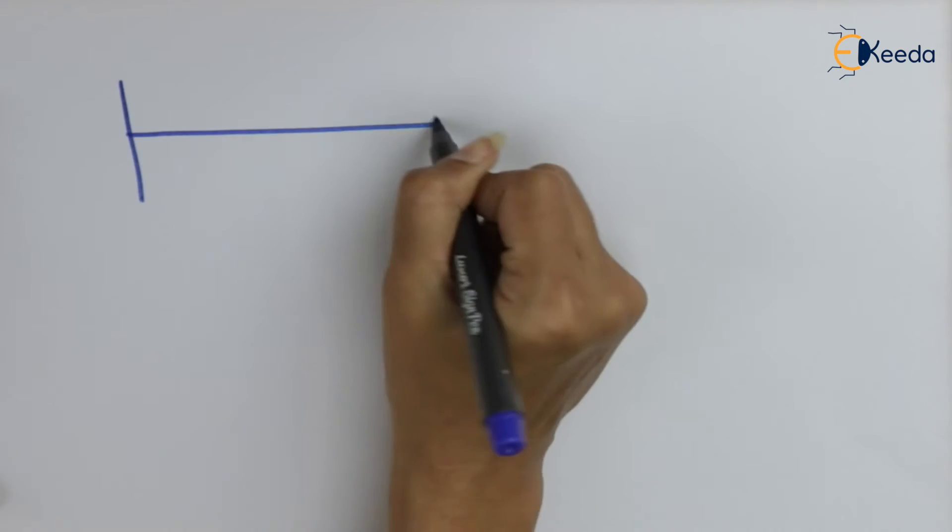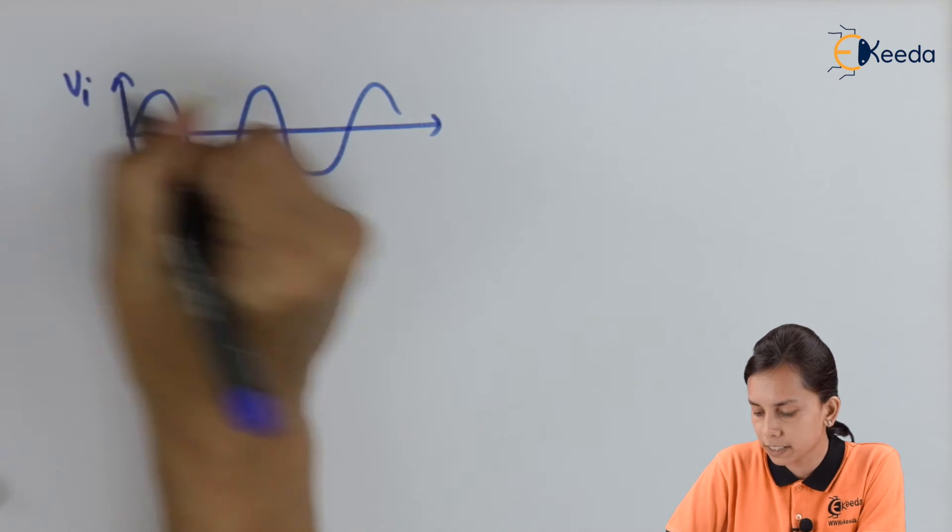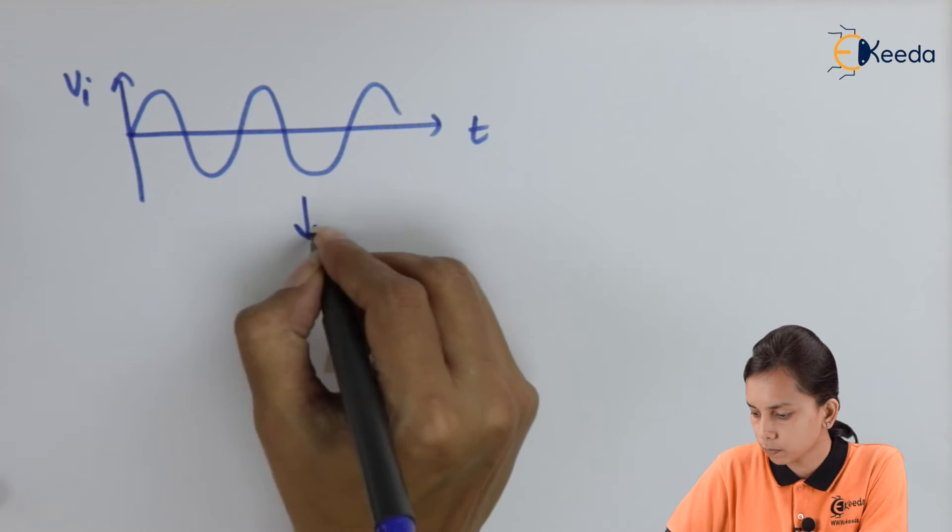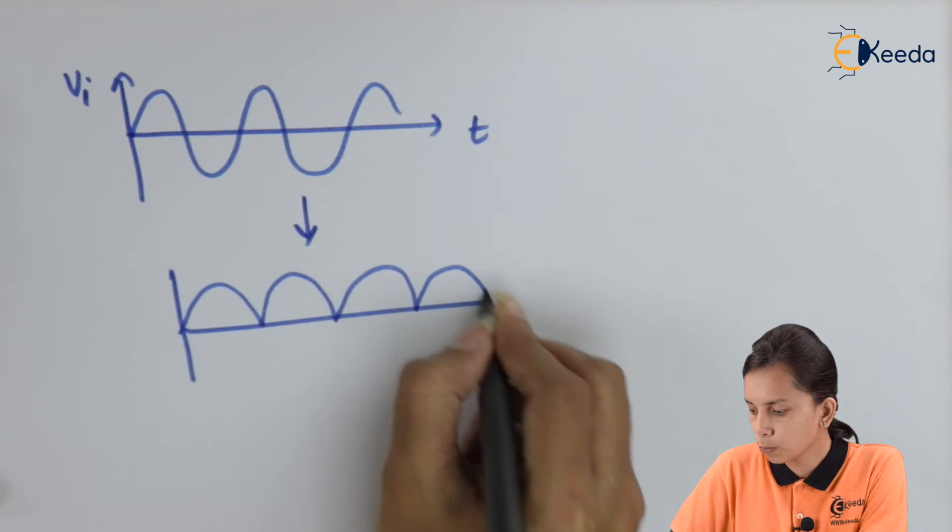With the help of rectification process we converted our AC into DC but that DC was pulsating in nature. This was our input which is in a form of AC. Now we get our output like this. This is our output.